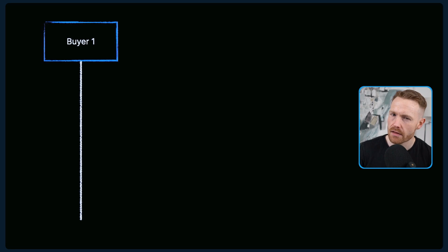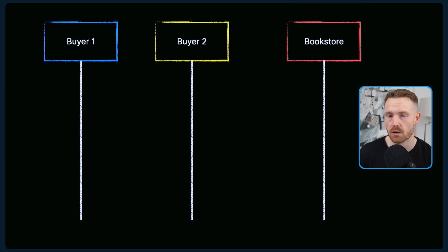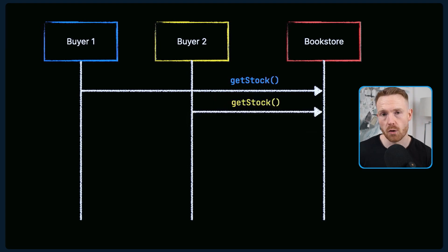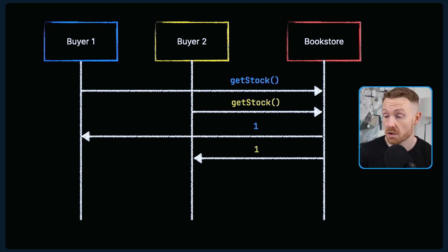Here's an example of what that means. Let's say we had buyer one and buyer two, and these buyers are in the market for a book. They go to a bookstore which happens to only sell one type of book and only has one in stock. The first buyer asks if the book is in stock, and the second buyer asks the same question. The bookstore checks its stock and tells both buyers yes, it has one book in stock — which is completely true at that time.